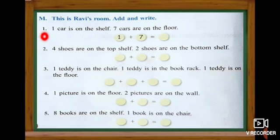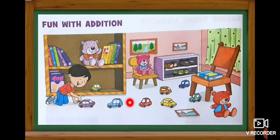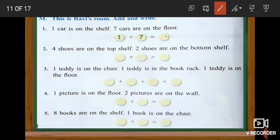Number one: one car is on the shelf and seven cars are on the floor. Look at the picture. Totally how many cars? We are going to add — shall we count? One, two, three, four, five, six, seven, eight. Totally how many cars are in Ravi's room? Eight cars.